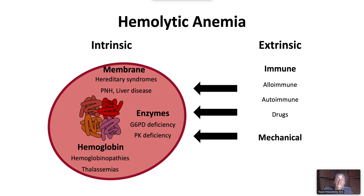Mechanical destruction occurs with microangiopathic hemolytic anemias, including TTP and HUS. It could occur due to intravascular devices or stenotic valves. Mechanical destruction could also occur as a direct action of infectious parasites or bacteria that destroy the red blood cell in the process of infecting it.